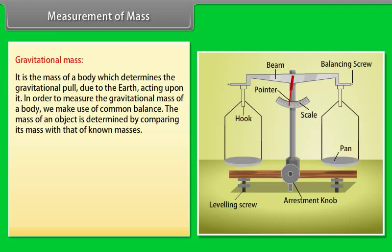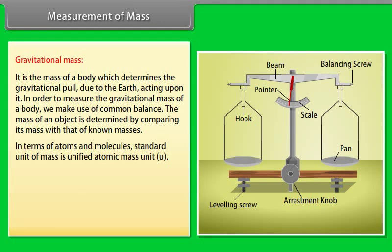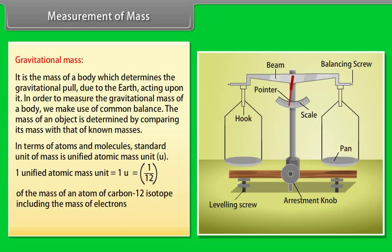In order to measure the gravitational mass of a body, we make use of common balance. The mass of an object is determined by comparing its mass with that of known masses. In terms of atoms and molecules, the standard unit of mass is unified atomic mass unit (u). One unified atomic mass unit is equal to 1u = 1/12 of the mass of an atom of carbon-12 isotope including the mass of electrons = 1.66 × 10^-27 kg.